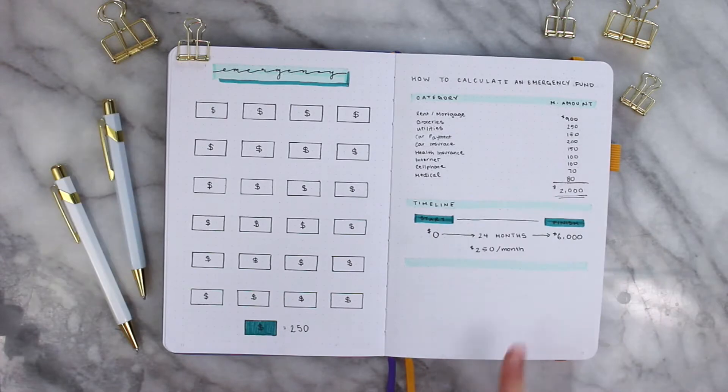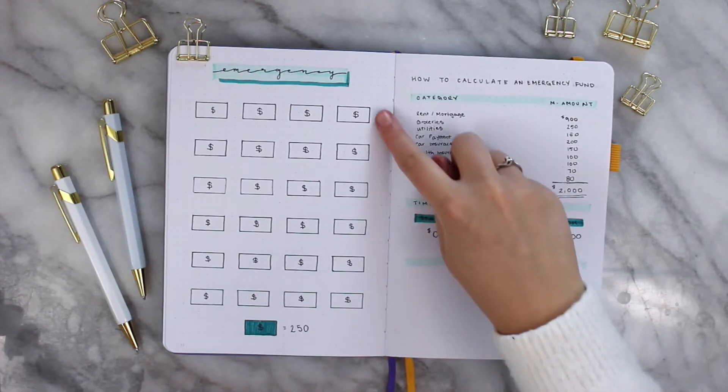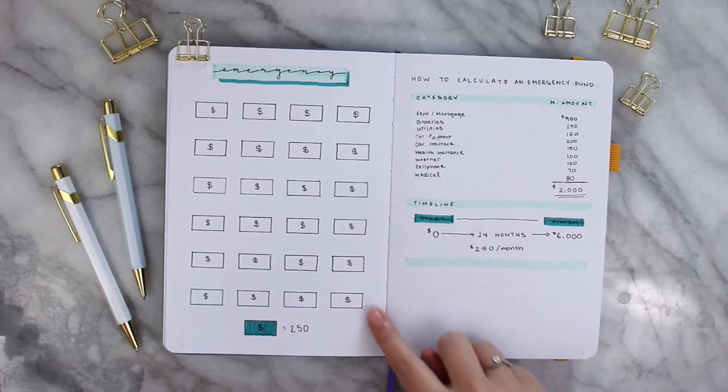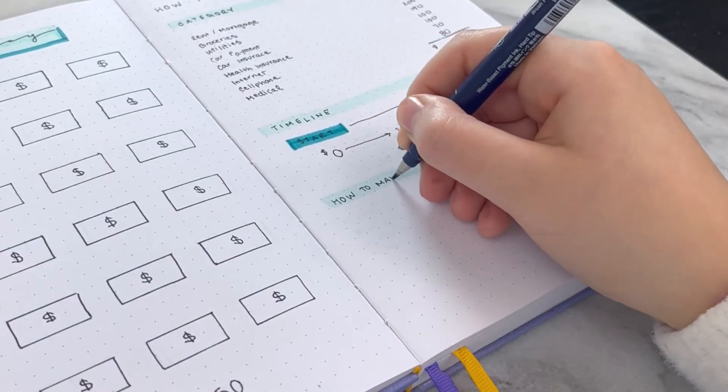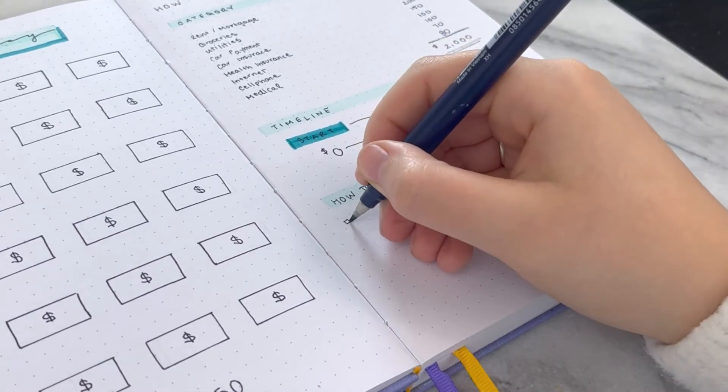And that is where my little money card on the left came from. So every single month, I'm going to be filling in one of those money cards. I only put in three months, but if you want to save more than that, I definitely would encourage you to do that.